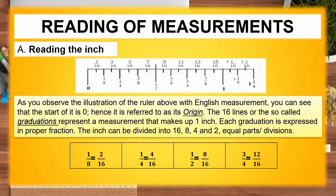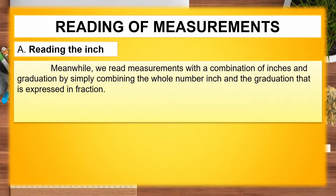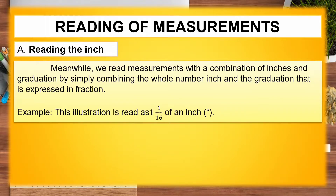One eighth equals two sixteenths. One fourth equals four sixteenths. One half equals eight sixteenths. And three fourths equals twelve sixteenths. Note: one inch equals sixteen graduations. We read measurements with a combination of inches and graduations by simply combining the whole number of inches and the graduation expressed in fraction. For example, this illustration is read as one and one sixteenth of an inch.